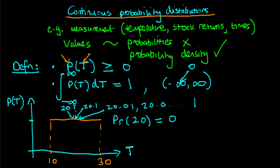So the probability of exactly 20 degrees Celsius is equal to zero — but that's not the height shown on the y-axis. In fact the height is 1 over 20, chosen to ensure that the integral of p(t) equals 1, since 1/20 times 20 equals 1 — which is the area under the curve. This tells us that the probability density of 1/20 is not the same as the probability, which we reasoned is zero.